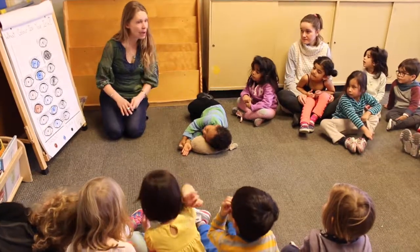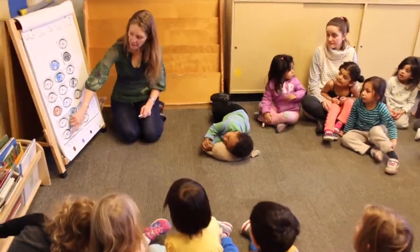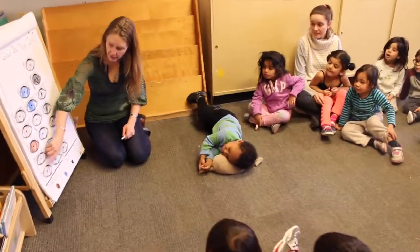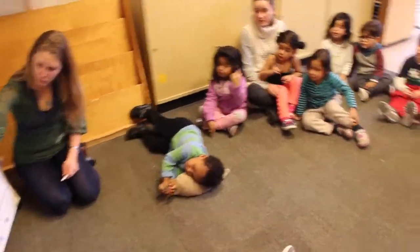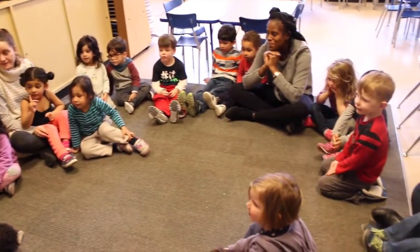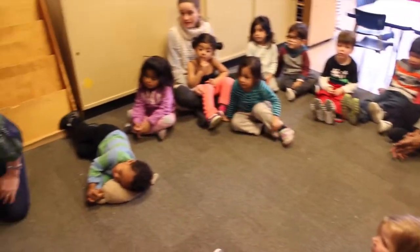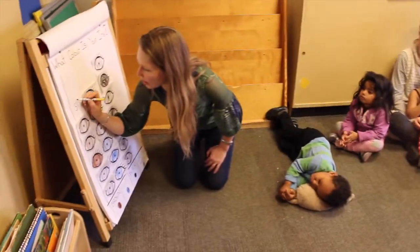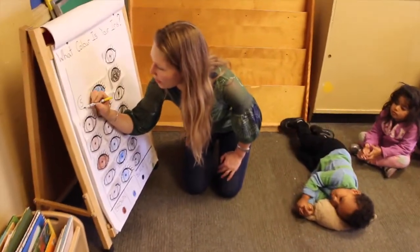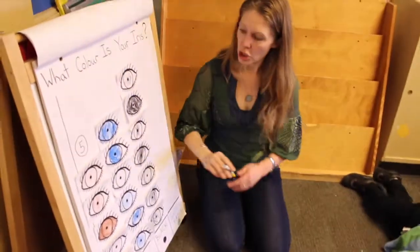Let's count how many people in our class have brown eyes. One, two, three, four, five. Five people in our class today said my eyes are brown. I'm going to write a five there — I usually write the number at the top. So it's also an opportunity for a little bit of numeral recognition.